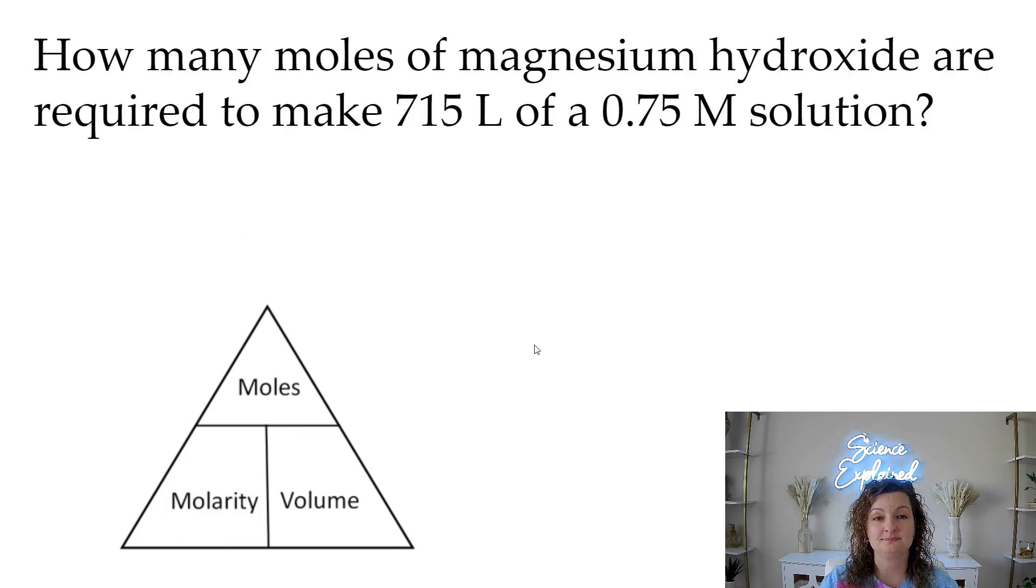Let's go ahead and try another one. How many moles of magnesium hydroxide are required to make 715 liters of a 0.75 molar solution? So we're given liters, which is volume. We're given molarity, and it asks us to find moles. So let's go ahead and cover up moles, and you can see that we are going to be multiplying.